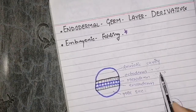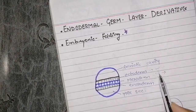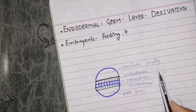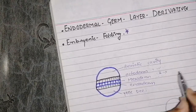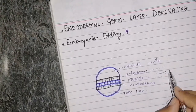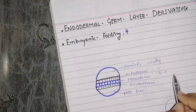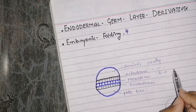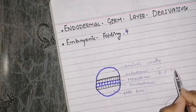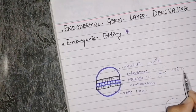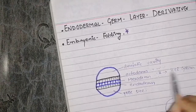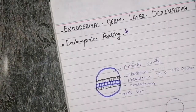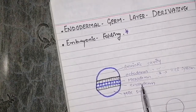Intermediate mesoderm derivatives specifically — what do we know about intermediate mesoderm derivatives? It gives rise to the urinary system and reproductive system. That is what we get from intermediate mesoderm.